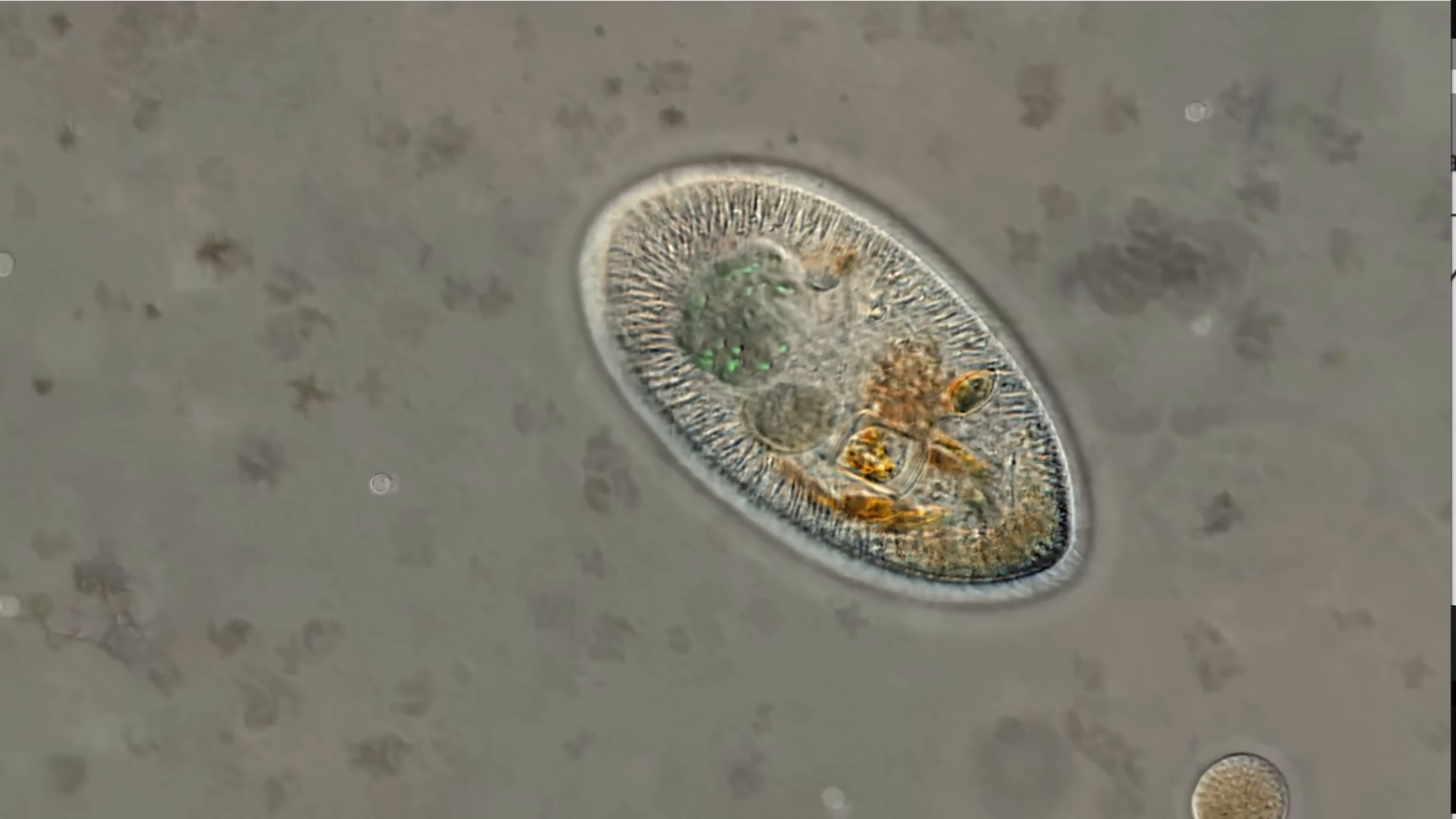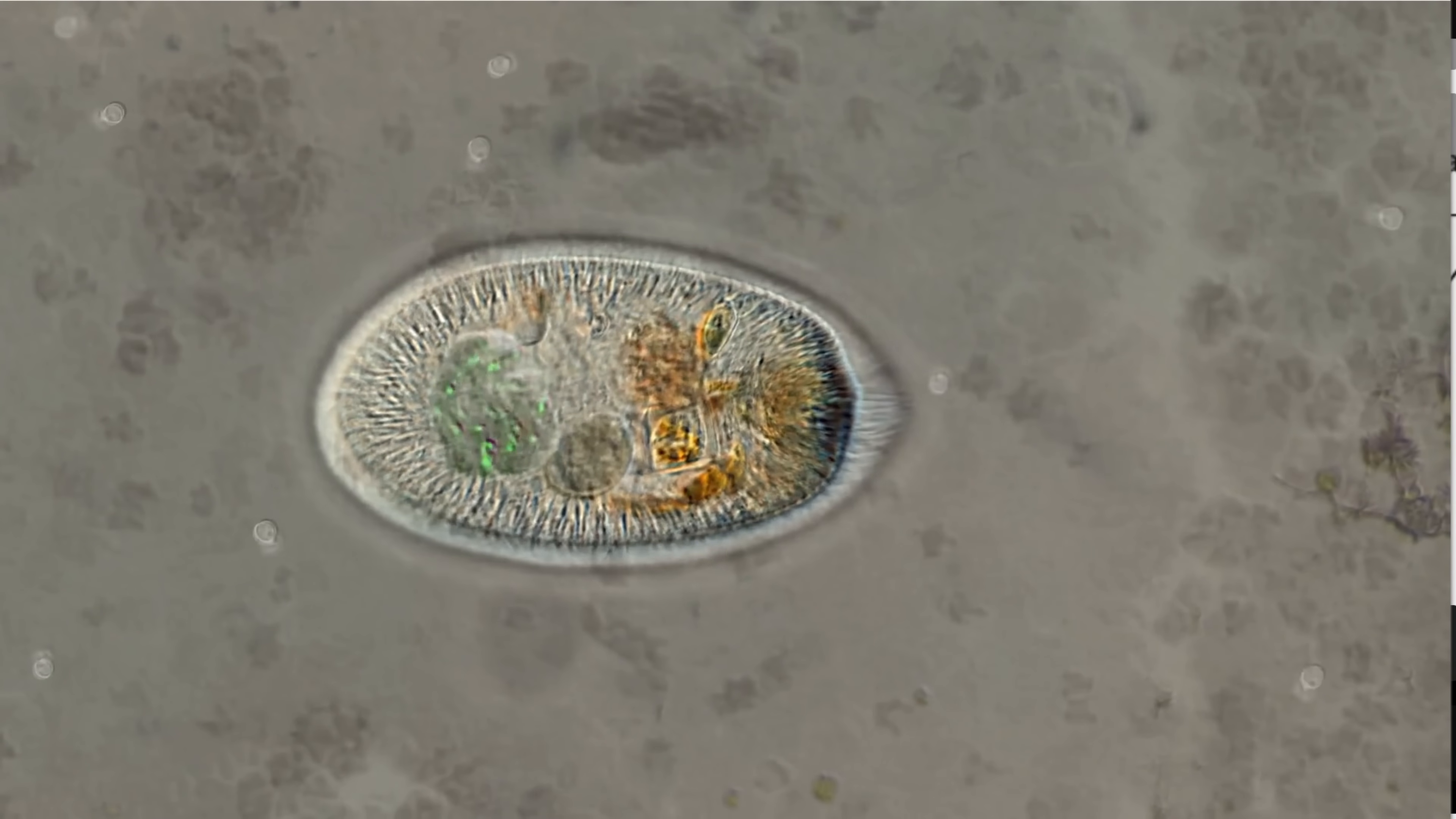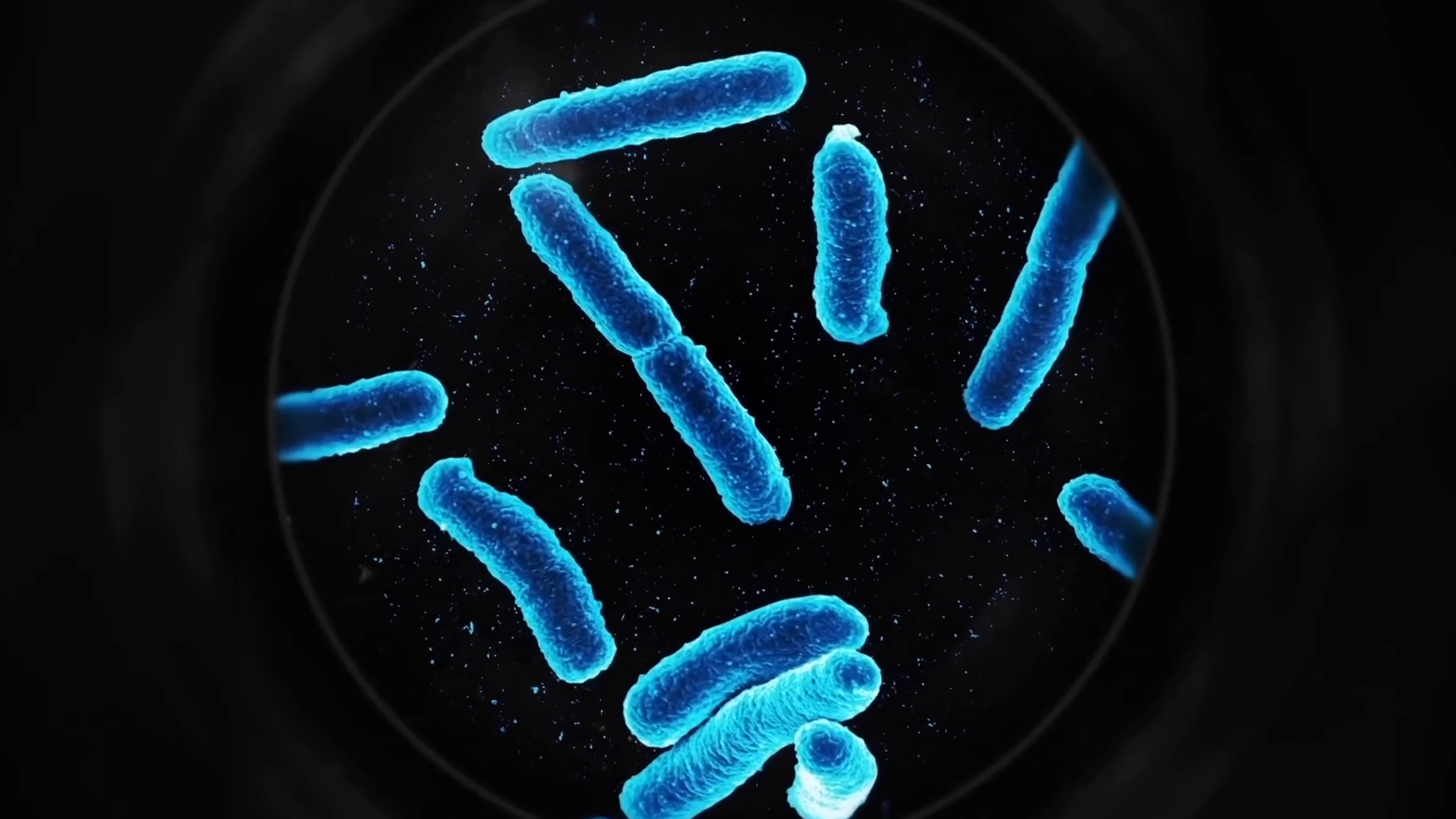And the important side note here is that LUCA was not actually the first organism. It was not the first form of life. Something definitely existed before this organism. And something else might have also been not the last, but the first universal common ancestor, which I guess we can call FUCA. And so quite a lot of life definitely existed way before LUCA, possibly for hundreds of millions of years. But only one organism seemed to have then led to the evolution of everything.